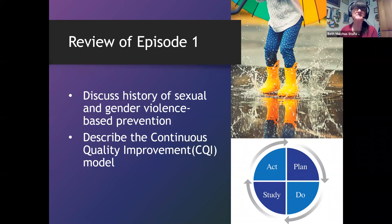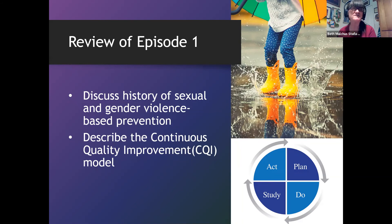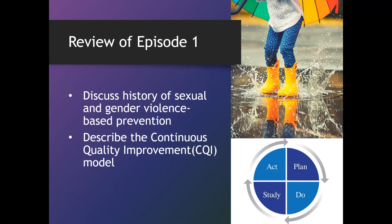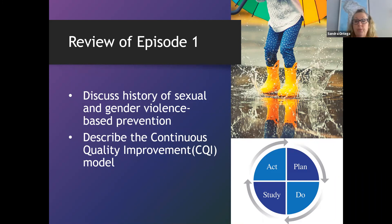The takeaways from this episode are to be able to discuss the history of sexual and gender-based violence prevention. In the beginning, we were focused more on risk reduction and awareness. Now we are working on the Stop SV Technical Package, and we are still growing to find out what works. You are part of this growth by sharing what you're learning — it's the CQI in action. We also remember how our movement has silenced some voices, specifically the voices of women of color. These women have been courageous and have always and continue to influence our movement, and we must work on racial justice and equity as we work on sexual and gender violence. This episode also described the continuous quality improvement model — a never-ending cycle that helps us plan, implement, and evaluate our programs better.